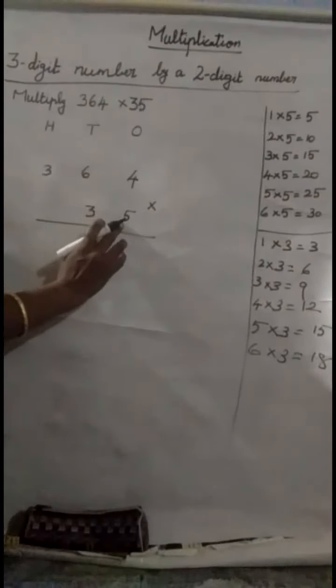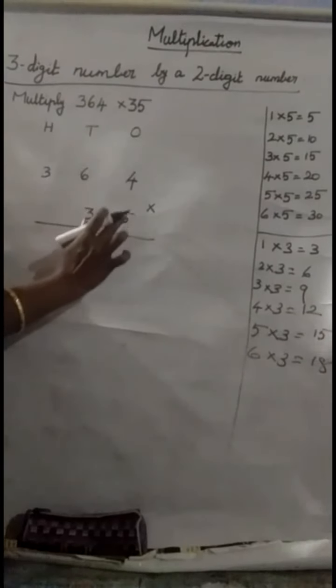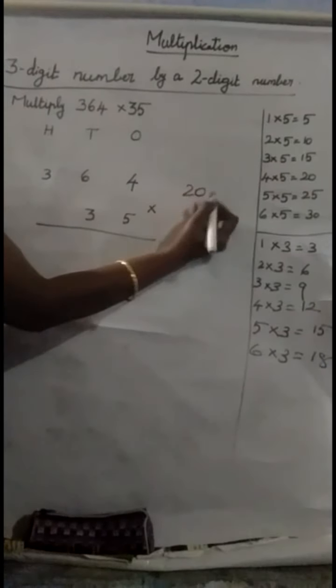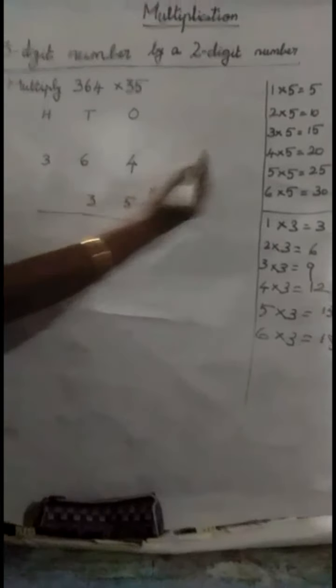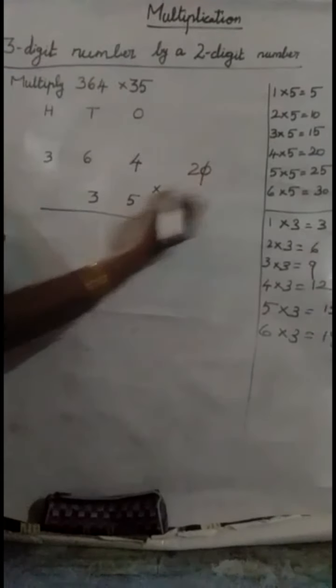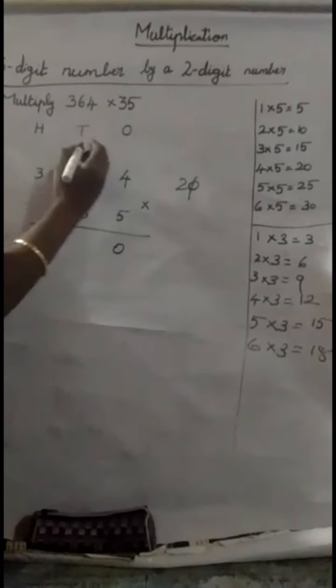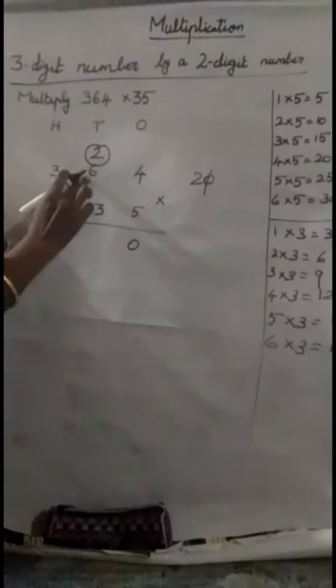Let us see. 364 multiplied by 5. So, first start from 1s place. 4, 5s are 20. 20. Write it on the side. 20 is a 2 digit number. Directly we can't write here. So, strike out the 0. Put the 0 in the 1s place. And 2 in the 10s place.